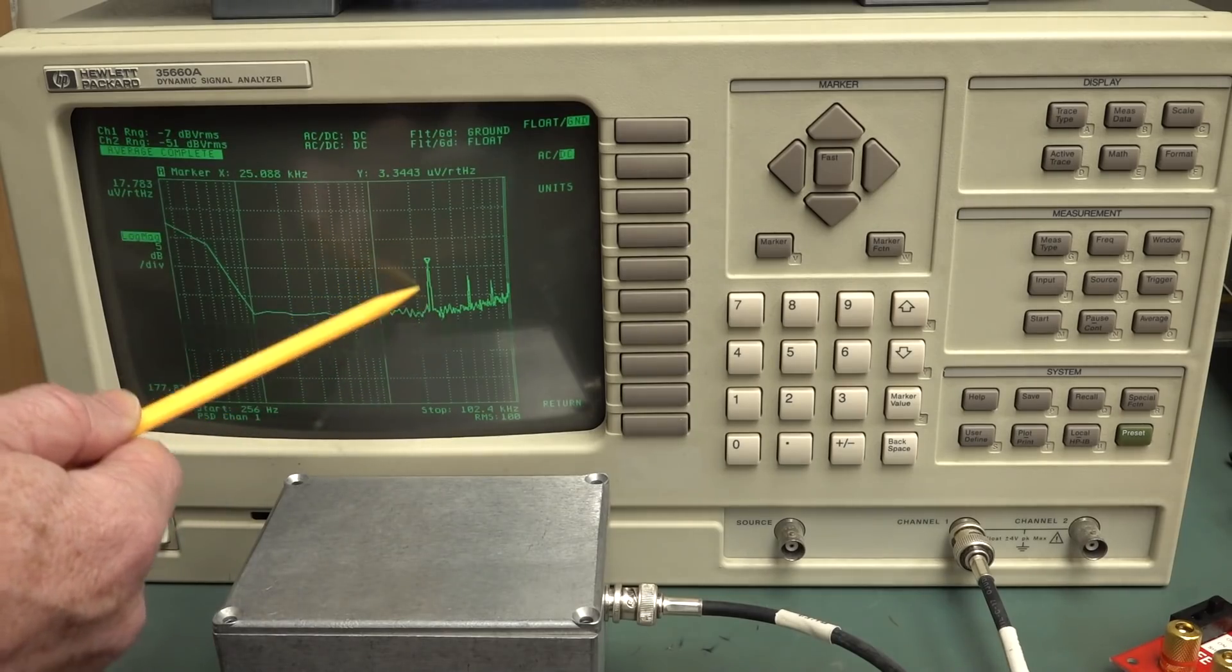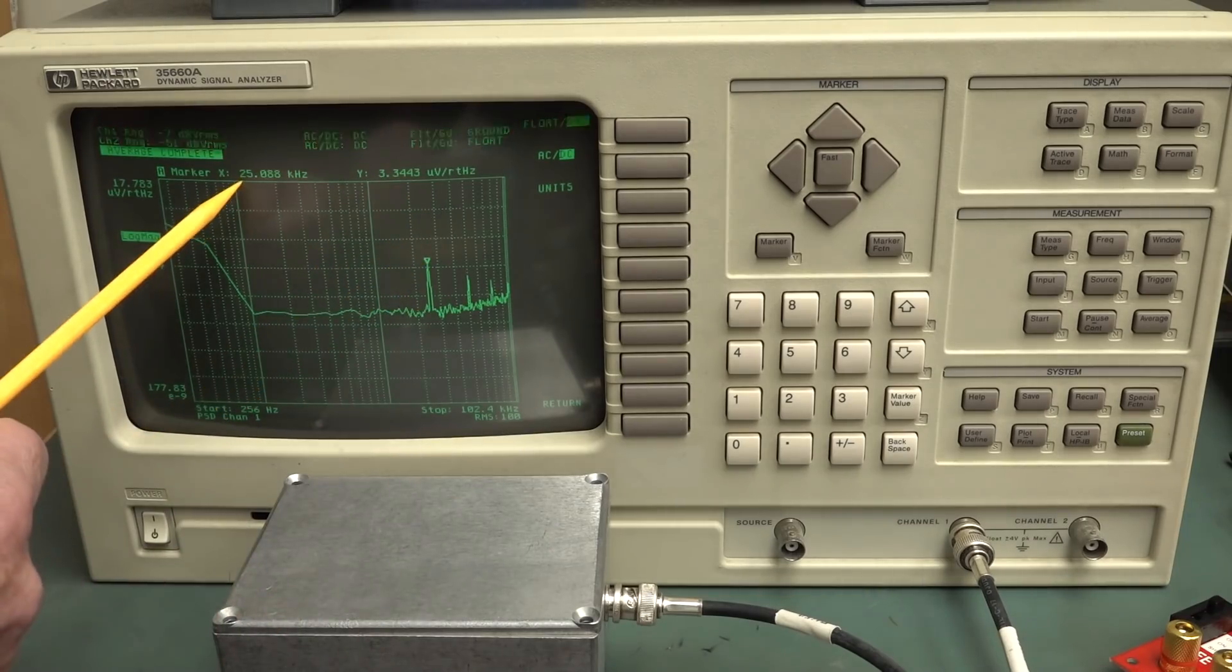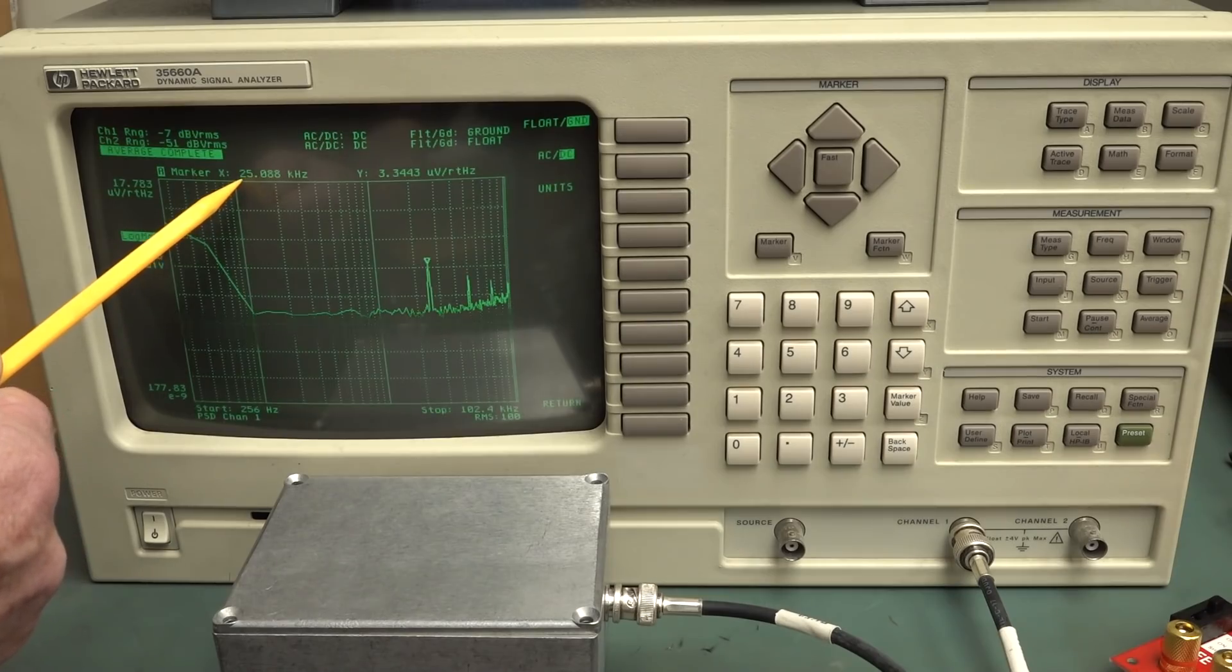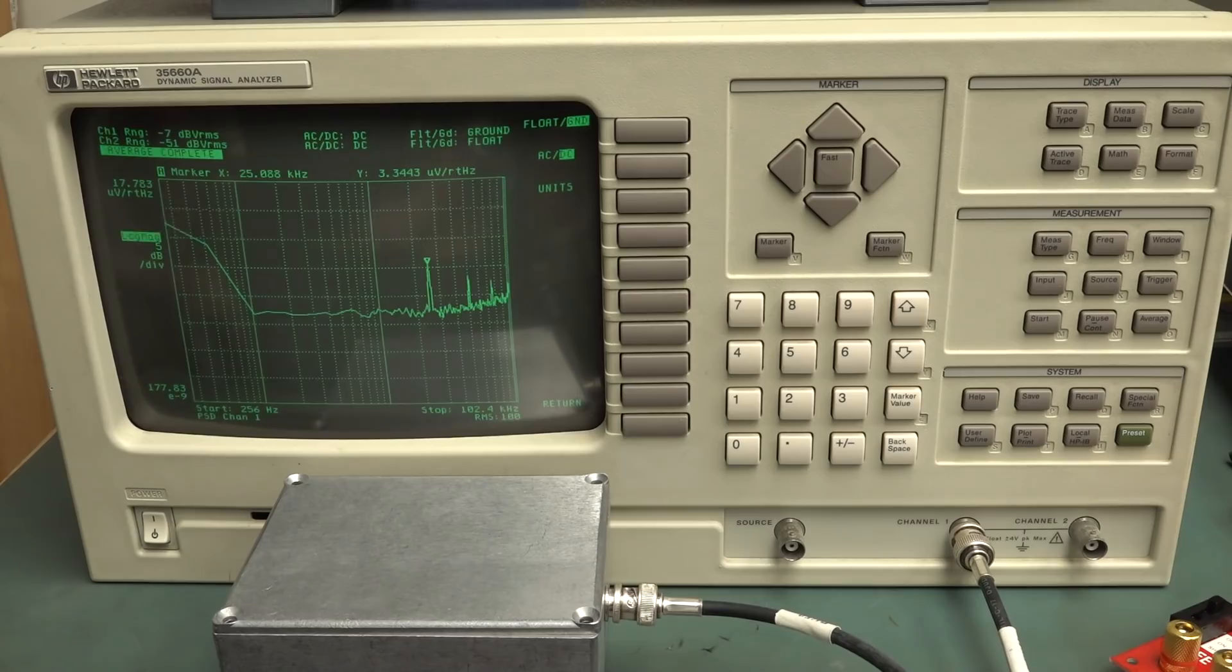We're getting some interesting little spikes in there. I've got 100 averages on, and I've got the cursor right there, and you'll notice that it's actually around about 25 kilohertz there for this spike. What is this spike here? Aha.